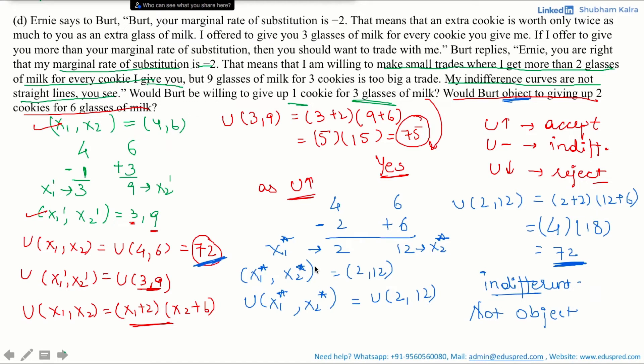Since the trade does not make Bert worse off — his utility remains at 72 — he would be indifferent between trading and not trading. The trade is not making him better off, but it is not making him worse off either. So he would be fine with making this trade and would not object to giving up 2 cookies for 6 glasses of milk.